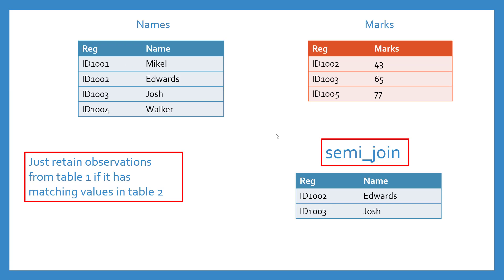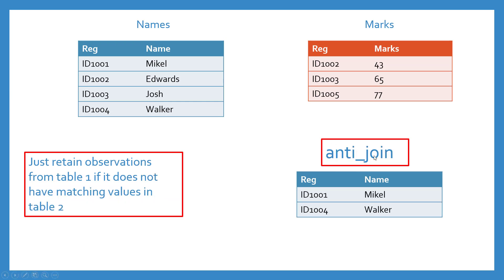Let's also look at anti join, which is the opposite of semi join. What it does is it retains the observations from table one if they do not have matching values in table two. In semi join, we retained 1002 and 1003 because they were common in both tables. But in anti join, it takes the names table, matches, and removes all observations that have a match with the marks table, retaining only the ones that do not have any match — which are 1001 and 1004.